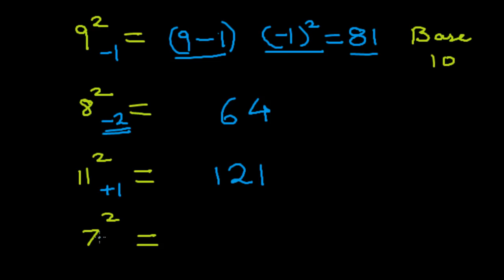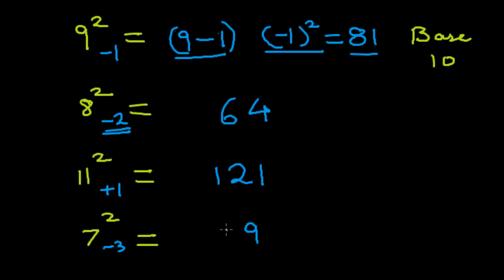To find the square of 7: 7 minus 10 is minus 3. We square this number — 3 squared is 9. Then 7 minus 3 is 4. So the answer is 49.